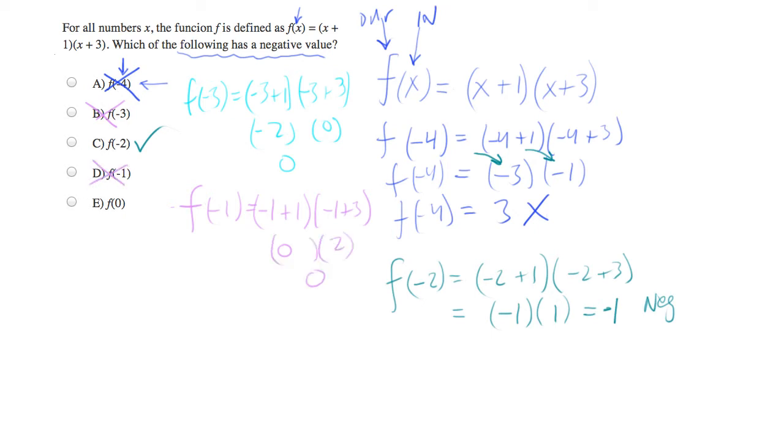And finally, let's try f of 0. 0 plus 1 times 0 plus 3. That's 1 times 3, which equals 3. So e is out.